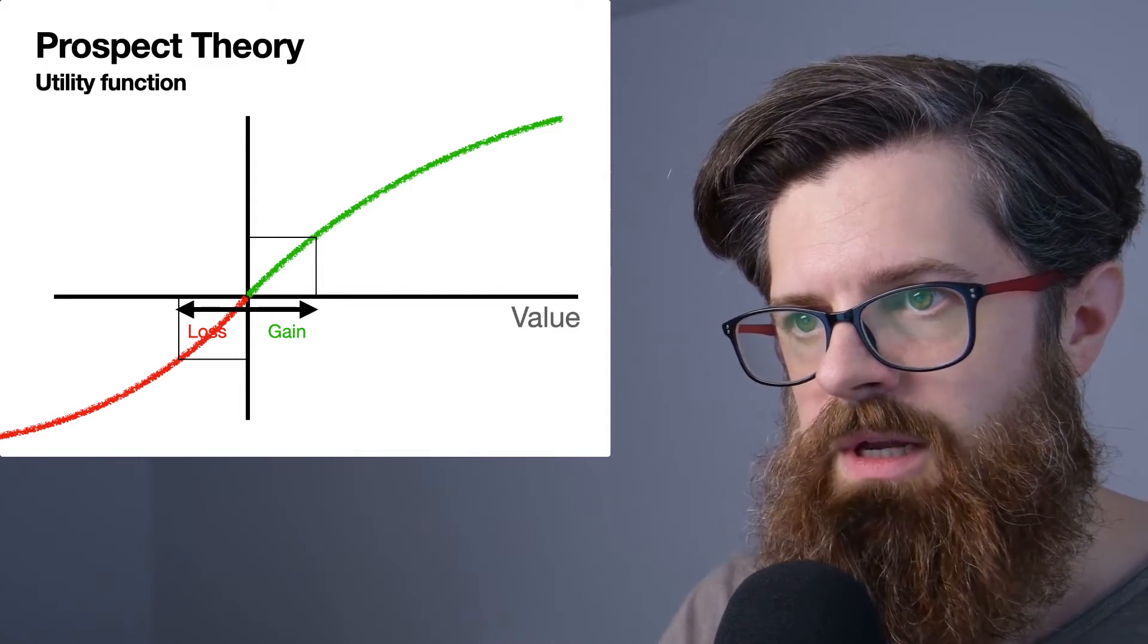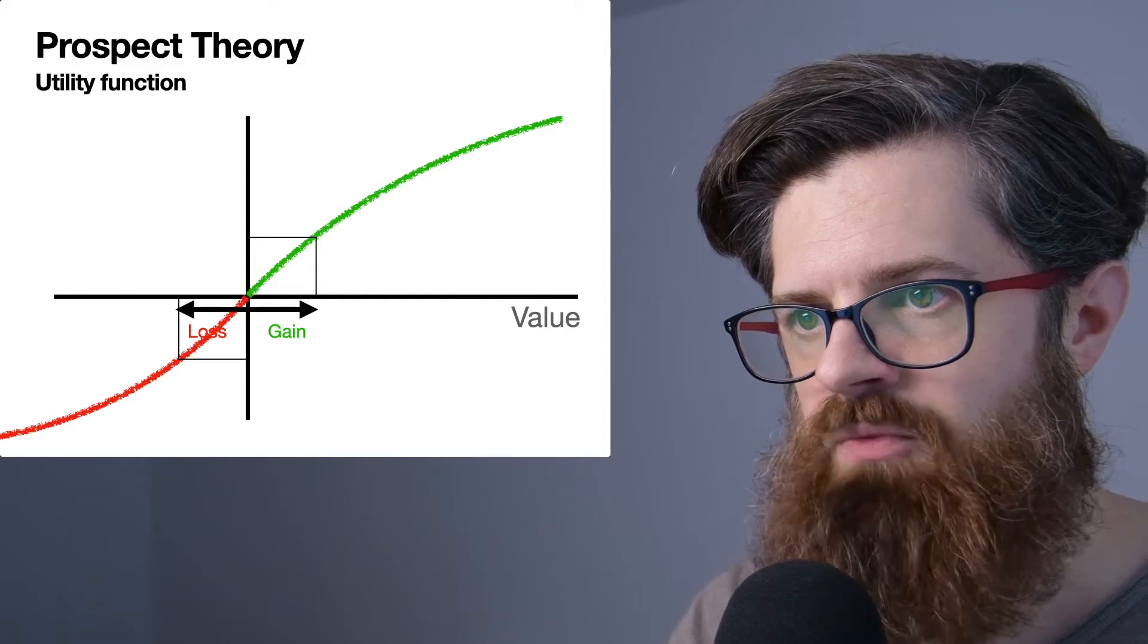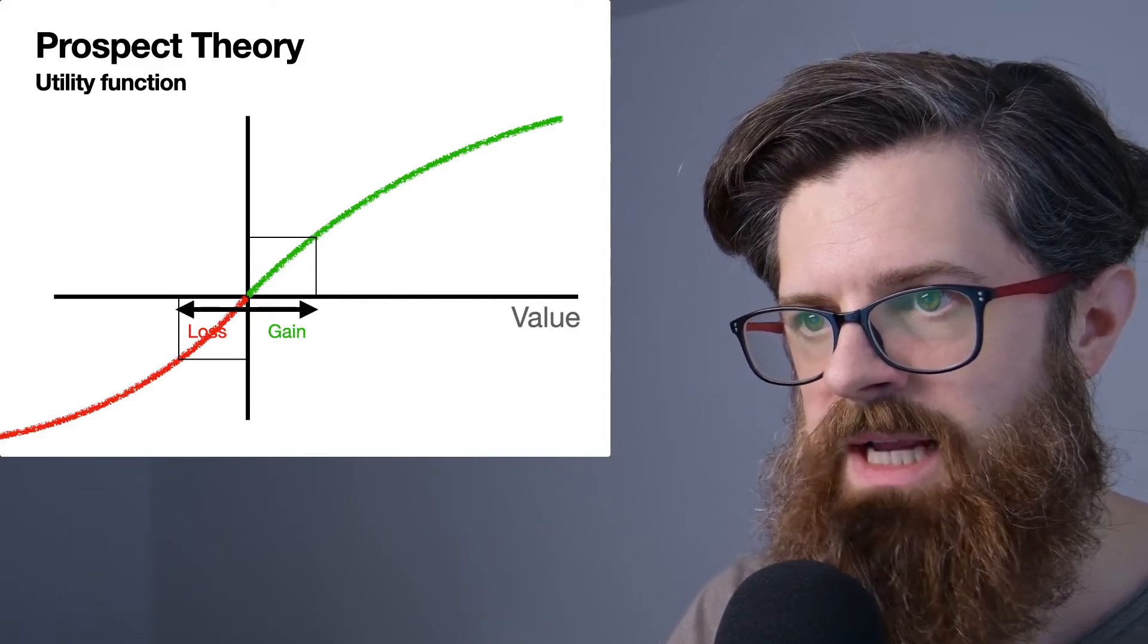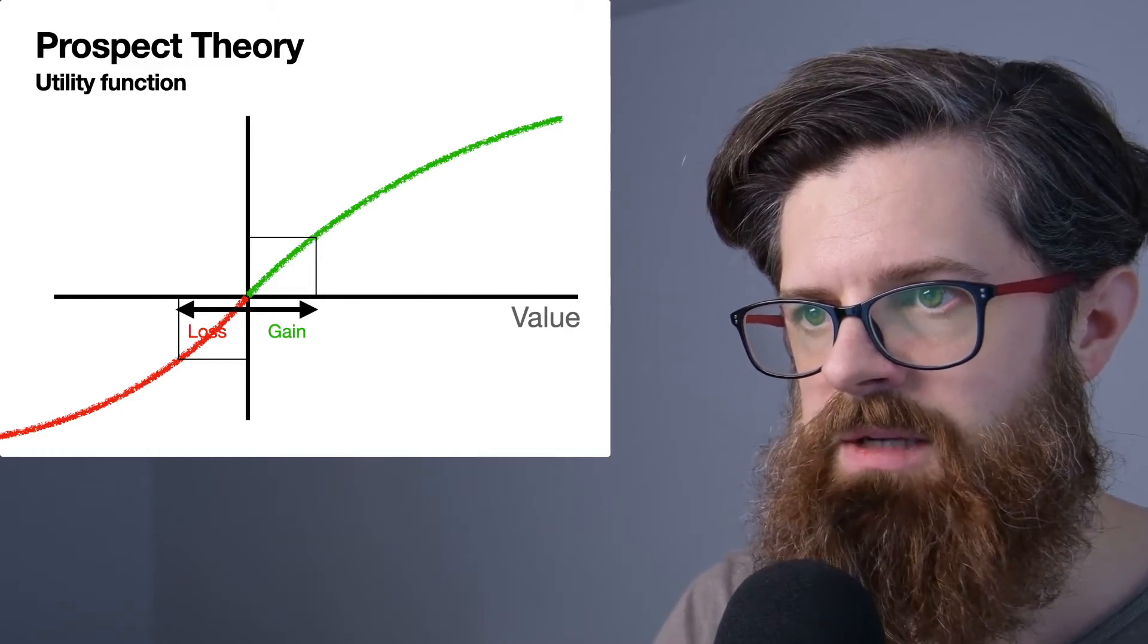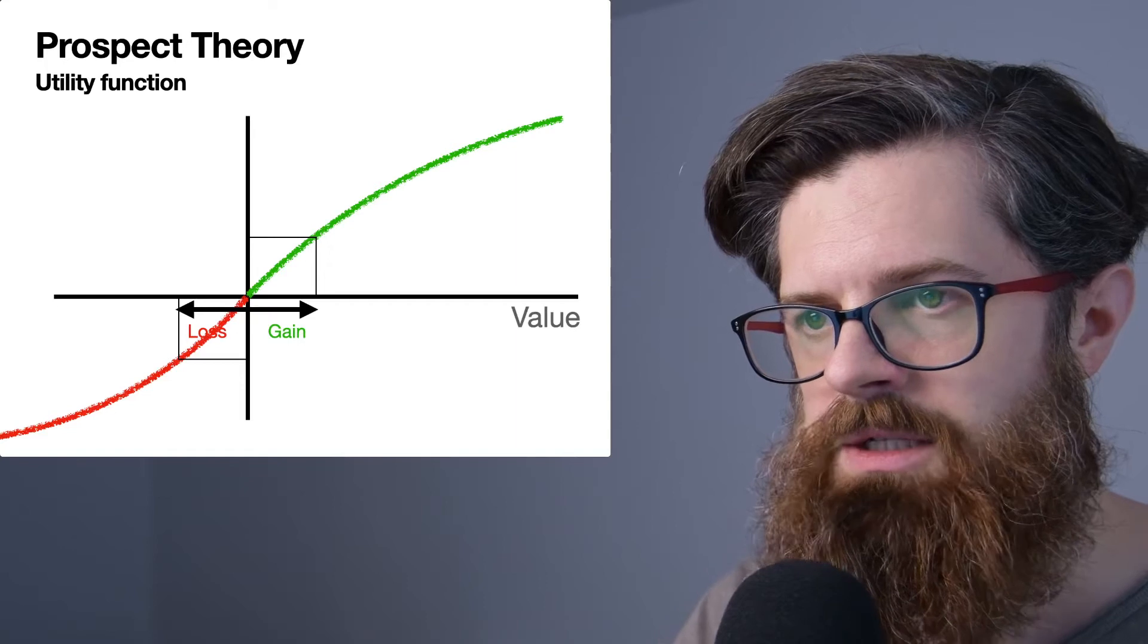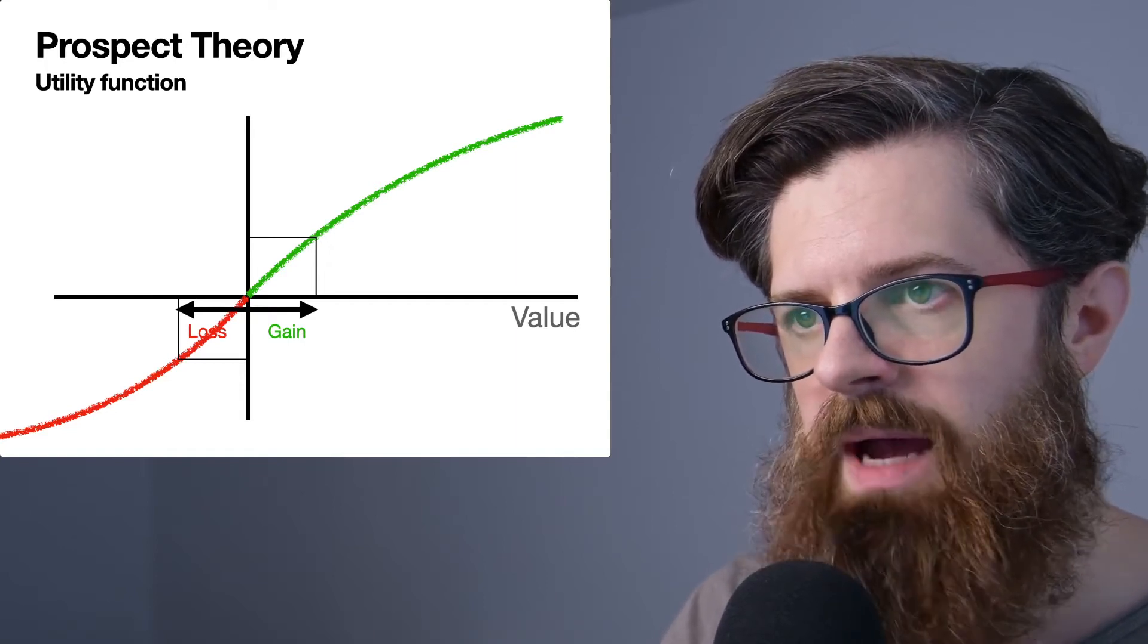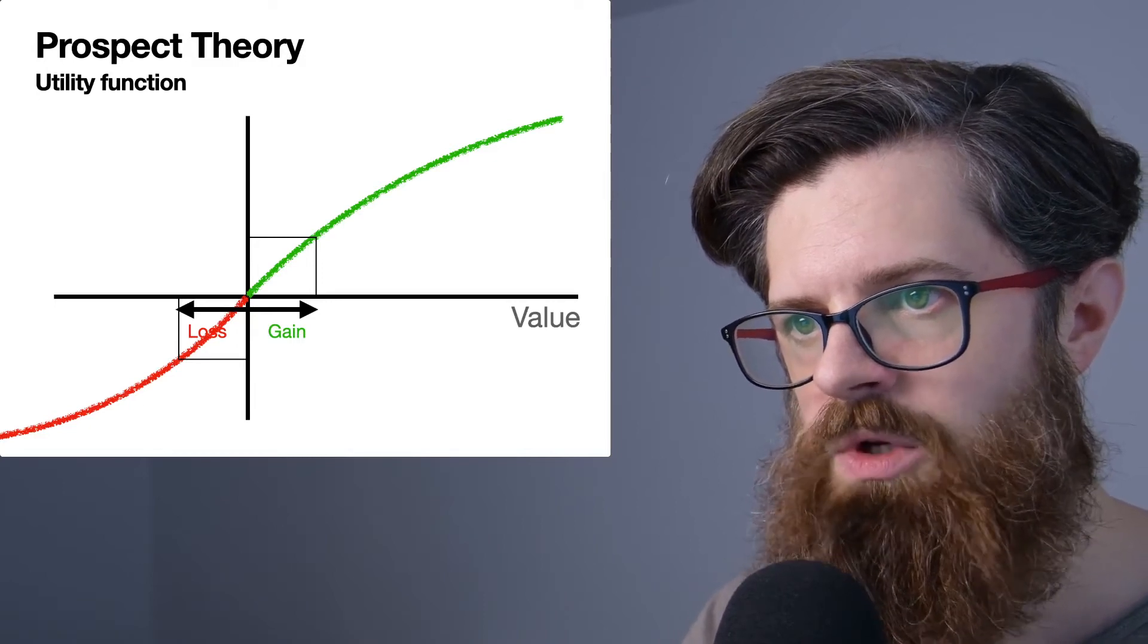One of the differences compared to that video is that we have this red line which represents losses for negative amounts of money. We can see that this has a similar type of shape.